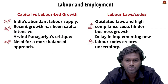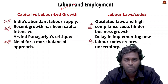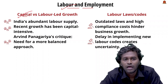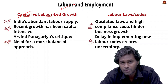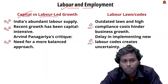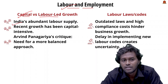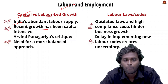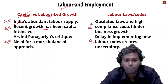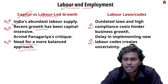The first problem in labor and employment is the confusion between labor-intensive growth and capital-intensive growth. India has 63% working age population, yet recent development is based on capital-intensive approaches. Economist Arvind Panagariya pointed out that this is not ideal, and therefore we need a more balanced approach.